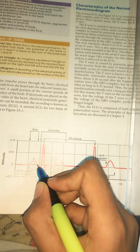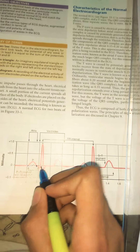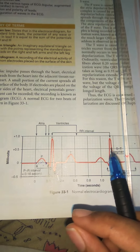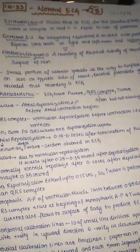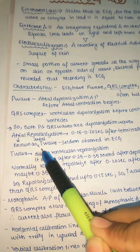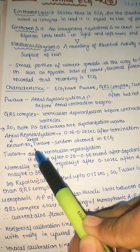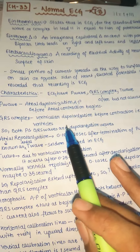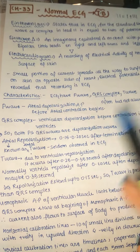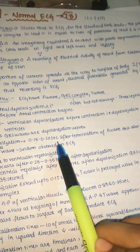Atrial repolarization: as the atria undergo depolarization, they must also return to their normal resting membrane potential, so atrial repolarization also occurs. It starts about 0.15 to 0.20 seconds after the termination of the P wave. Atrial repolarization lies within the QRS complex but is not shown because it has very small amplitude. It is also known as the atrial T wave but is seldom observed in a normal ECG.